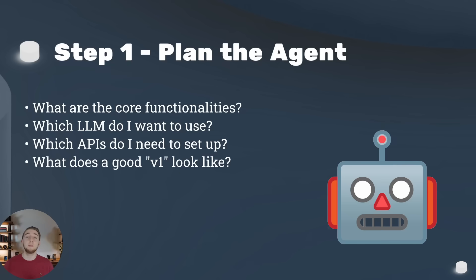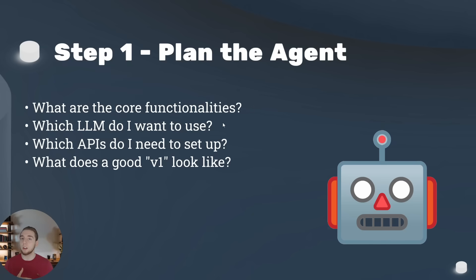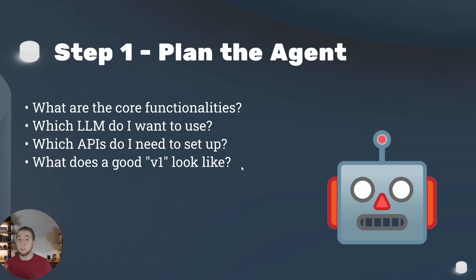I really want to emphasize planning because it can save you hours of going down the wrong rabbit holes if you do some planning upfront. Ask yourself these questions, write out your answers in a document, chat with an LLM about them — it can help a ton. The questions can be pretty basic: what are the core functionalities I want for my agent, which LLM do I want to use, which APIs do I need to set up, and what does a good v1 look like? Starting with a simpler proof-of-concept agent is a great way to have something achievable to shoot for initially.